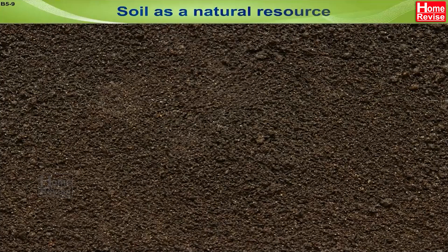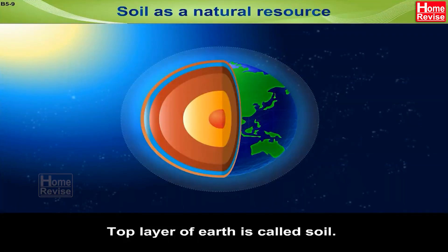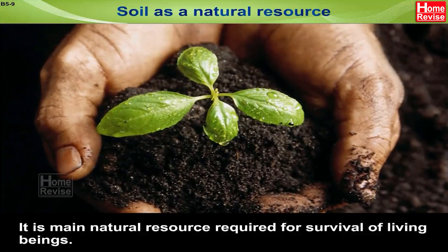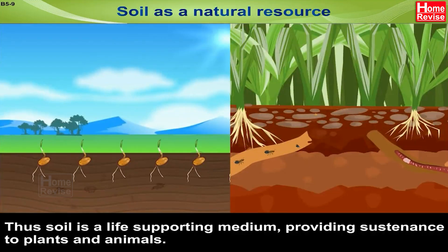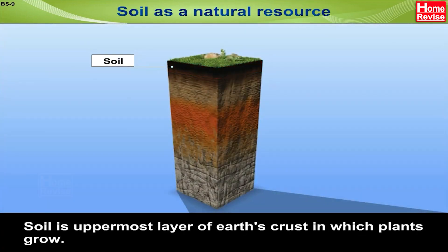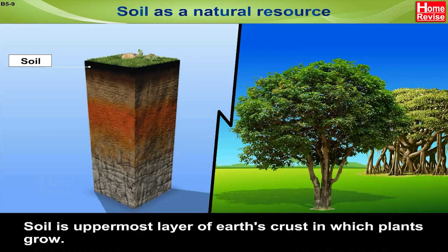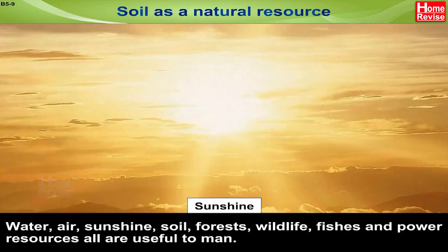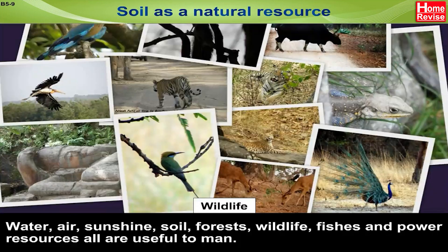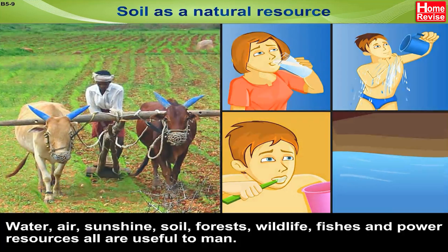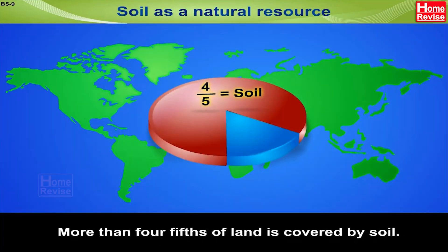Soil as a natural resource: The top layer of Earth is called soil. It is the main natural resource required for the survival of living beings and is a life-supporting medium providing sustenance to plants and animals. Soil is the uppermost layer of Earth's crust in which plants grow. Natural resources — water, air, sunshine, soil, forests, wildlife, fish and power resources — are all useful to man. More than four-fifths of land is covered by soil, and topsoil differs widely in colour.